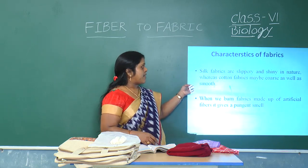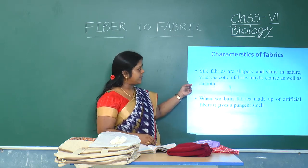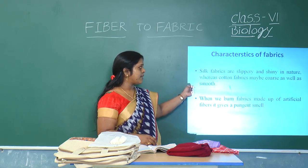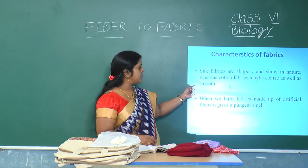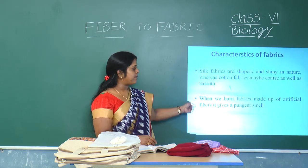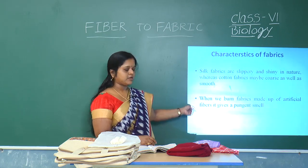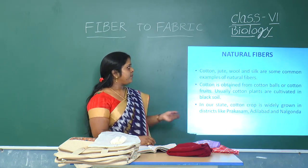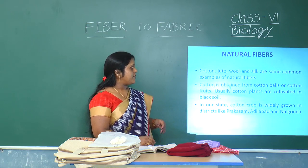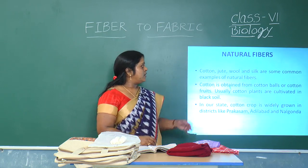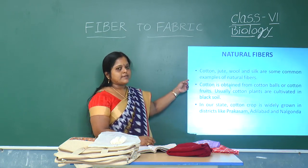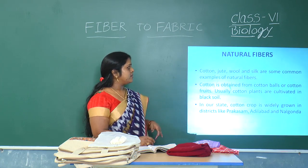Characteristics of fabrics. Silk fabrics are slippery and shiny in nature, whereas cotton fabrics may be coarse as well as smooth. When we burn fabrics made up of artificial fibers, they give a pungent smell. Cotton, jute, wool and silk are examples of natural fibers.